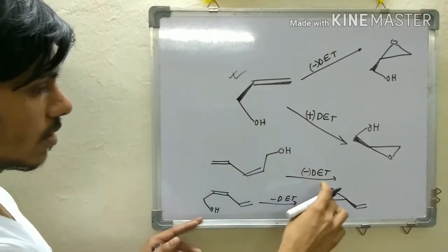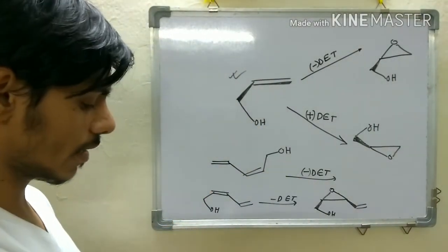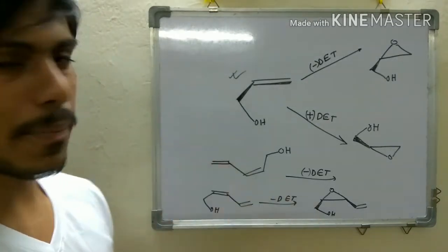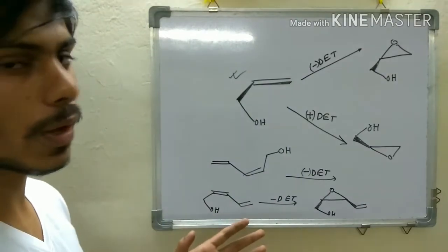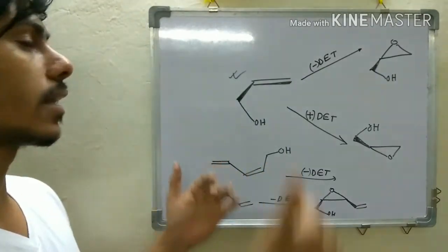So, this is stereoselective epoxidation, and for any example they have given, the same concept is there. You have to draw it in a perfect way, and then you can say either it can attack from the top face or from the bottom face.